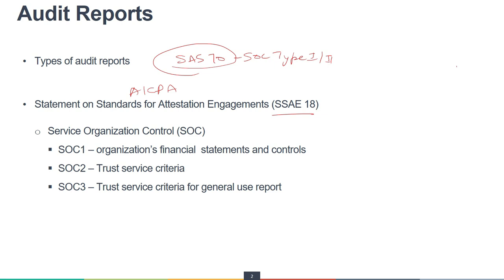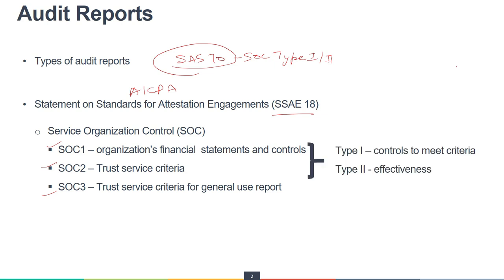There are three types: SOC 1, SOC 2, and SOC 3. SOC 1 is primarily used for financial focuses. For example, if you are providing any payroll services, SOC 1 may be required to do business, because for the financial statements and controls in place, you need to audit and define the controls accordingly.